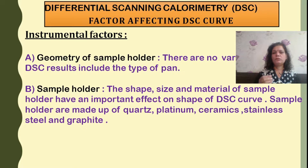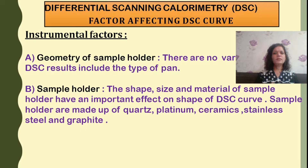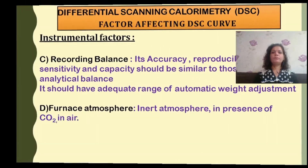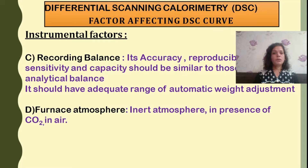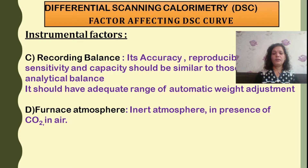The geometry of the sample does not vary the result of DSC much, but the sample holder shape, size, and material also affect the DSC curve. The sample holder can be made of quartz, platinum, ceramic, stainless steel, or graphite — materials which can withstand higher temperatures during DSC analysis. The recording system should be of high accuracy, reproducible, sensitive, and have a capacity similar to an analytical balance. The furnace atmosphere will definitely affect the results, as seen in DTA: using air, CO₂, or N₂ (inert atmosphere) changes the result. The same is observed in DSC.